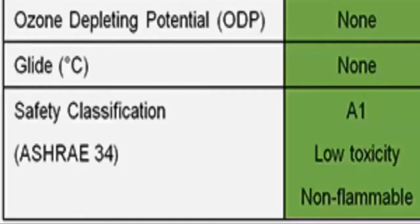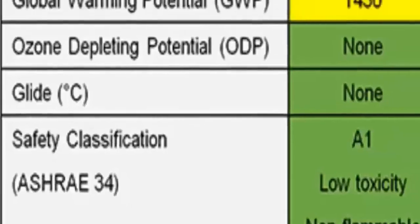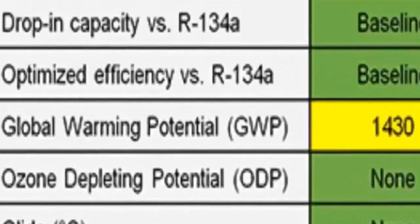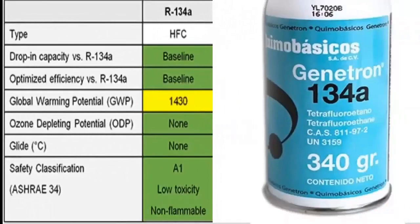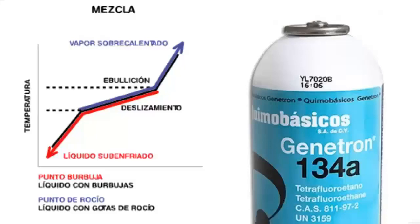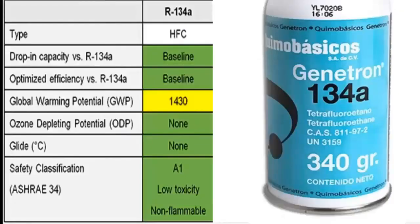4. R-134A refrigerant gas has a global warming potential of 1430. 5. R-134A refrigerant has no glide. This means that its temperature remains constant during the phase change, as long as the pressure does not change. 6. R-134A has great stability and compatibility with most materials.